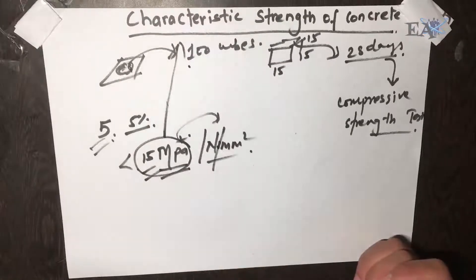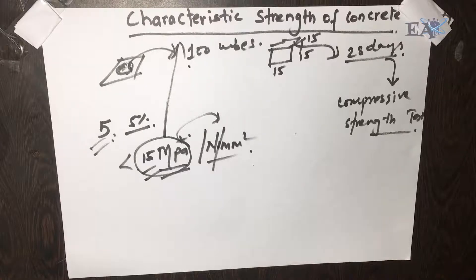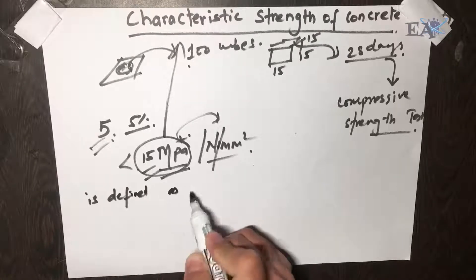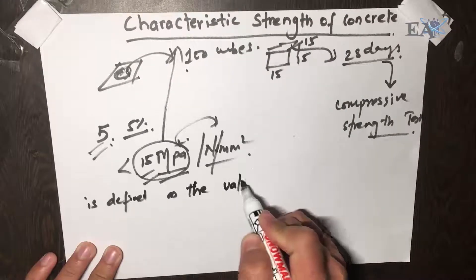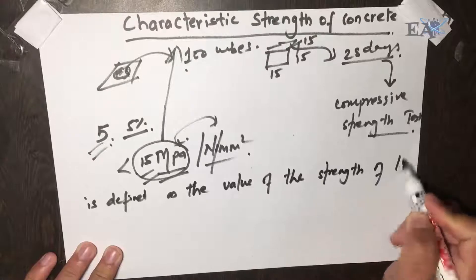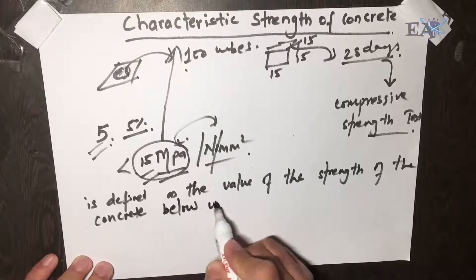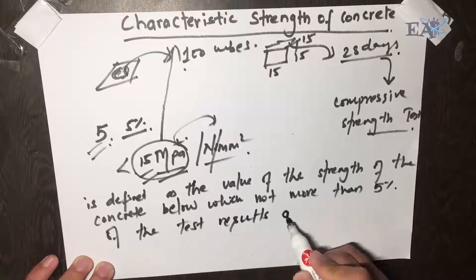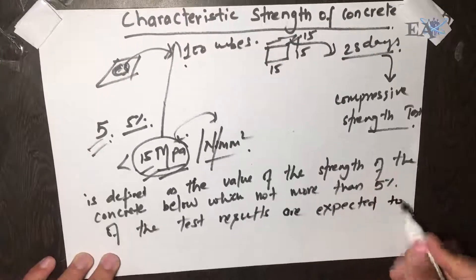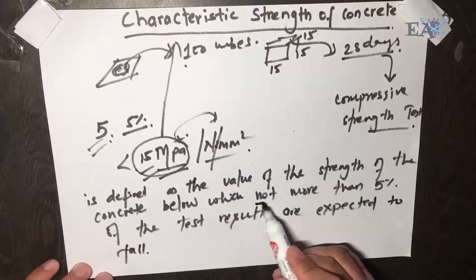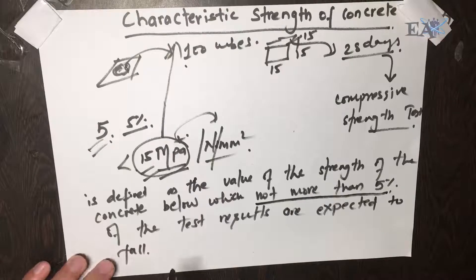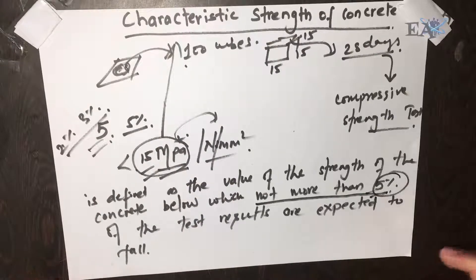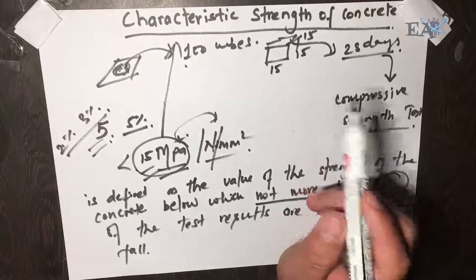The definition of characteristic strength is: it is the value of the strength of concrete below which not more than five percent of test results fall. It is important to note 'not more than five percent' — it can be two or three percent, but it must not exceed five percent. That value is known as the characteristic strength of the concrete.